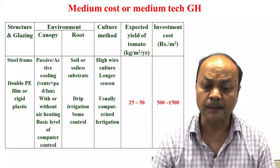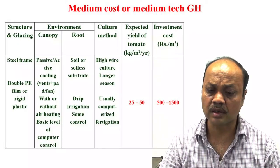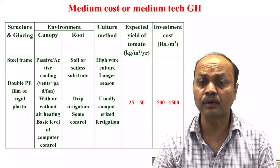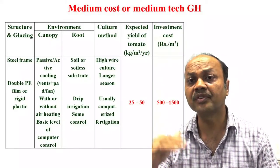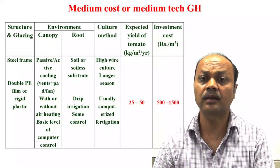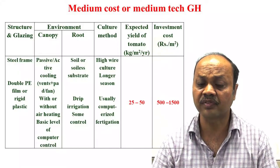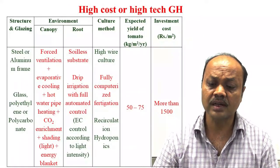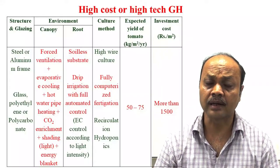In medium cost, soilless growing media may be used, and fertigation system is normally used. However, automated irrigation and automated fertigation are not typically used in medium cost greenhouses in India. Because cooling is better and the structure size is different, yield will be higher than low cost greenhouses. In high-tech greenhouses, yield varies between 500 to 750 ton per hectare.